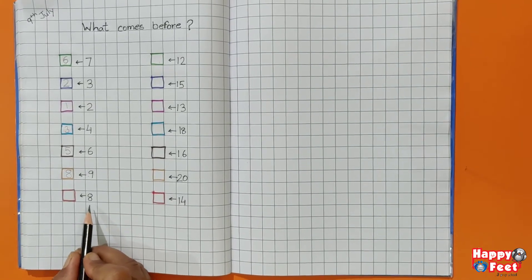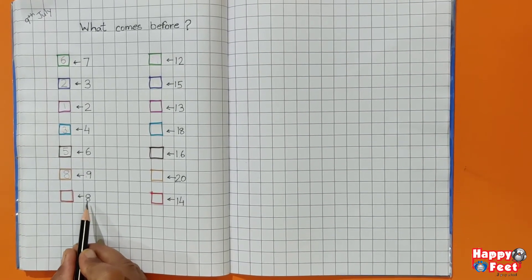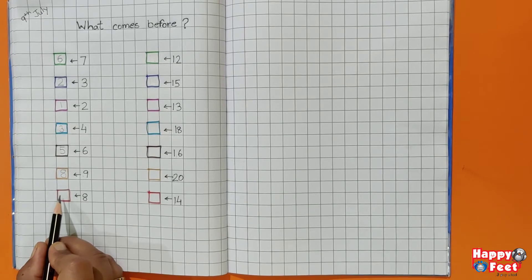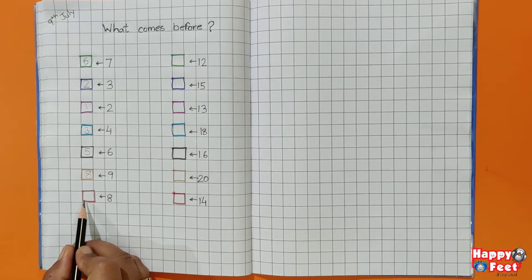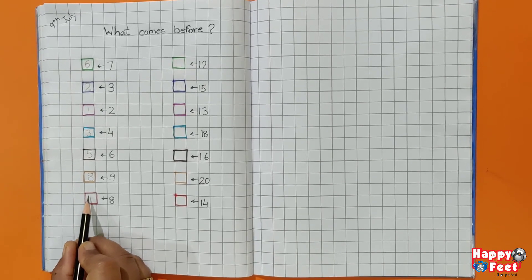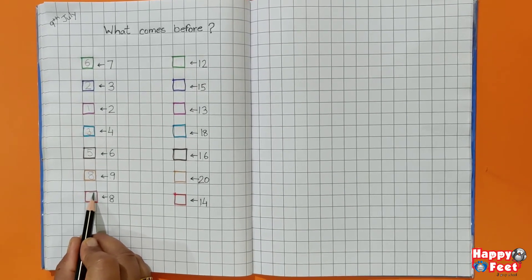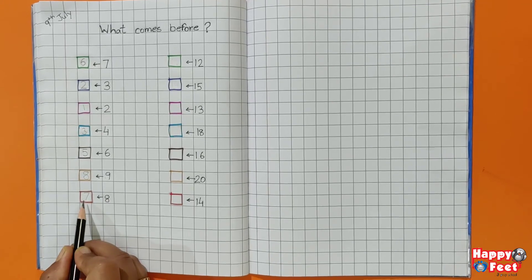Likewise. 10, 9, 8, 7. 8 के पहले कौन सा नमबर हमने बोला? 8 के बाद कौन सा नमबर हमने बोला? 7. याँ पहले क्या लिखेंगे? 7. What comes before 8? 7.